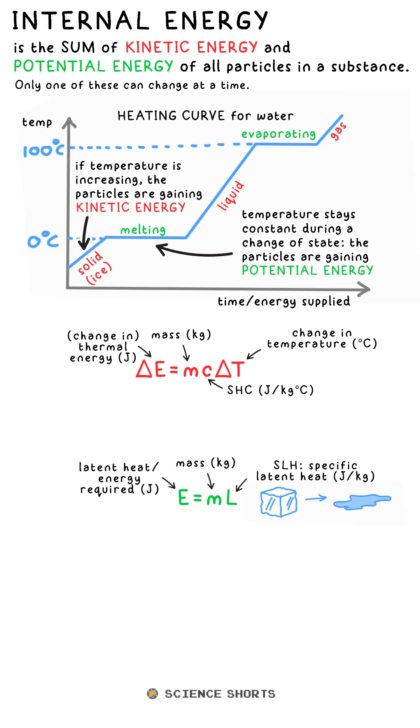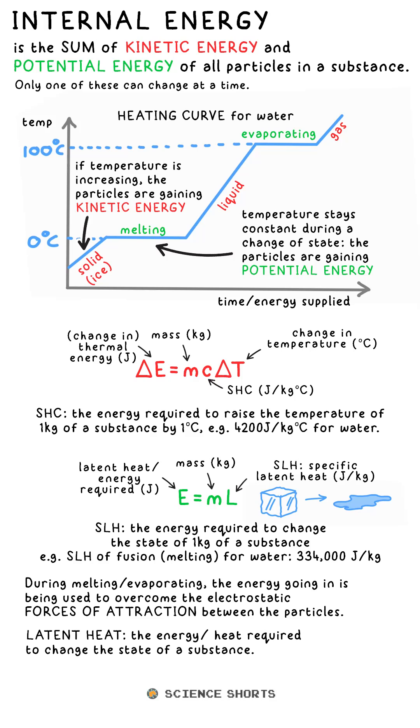We have equations for both of these energy changes. Specific heat capacity tells you how much energy is needed to raise 1 kilogram of a substance by 1 degree Celsius. SLH of a substance tells you how much energy is needed to change the state of 1 kilogram of it.